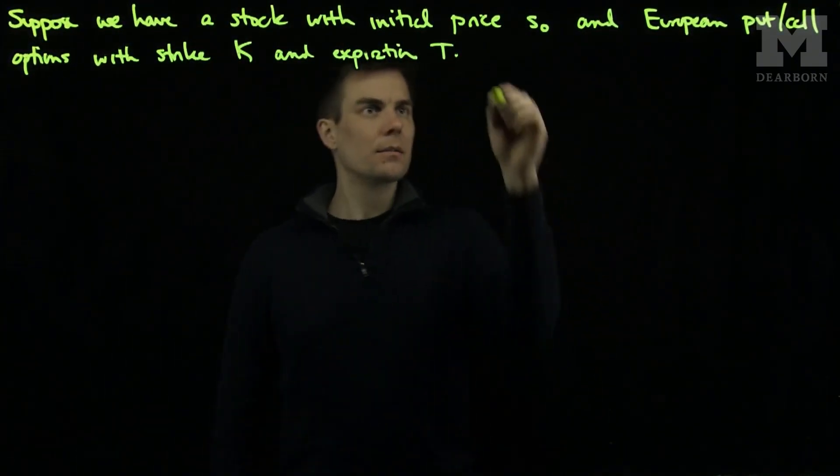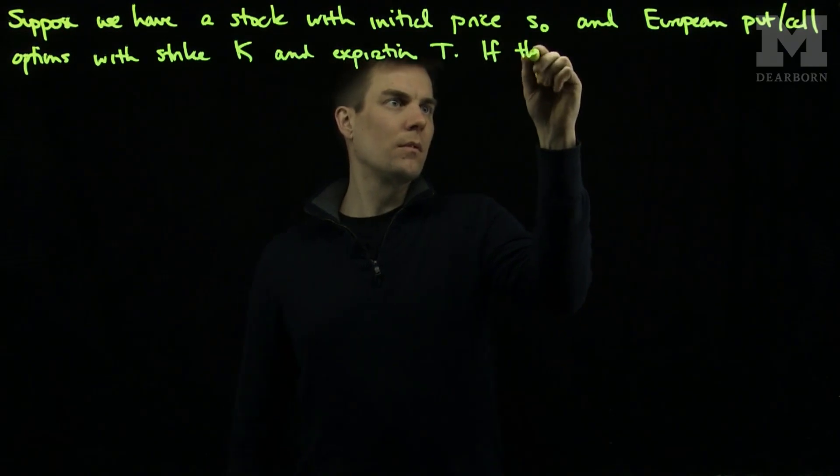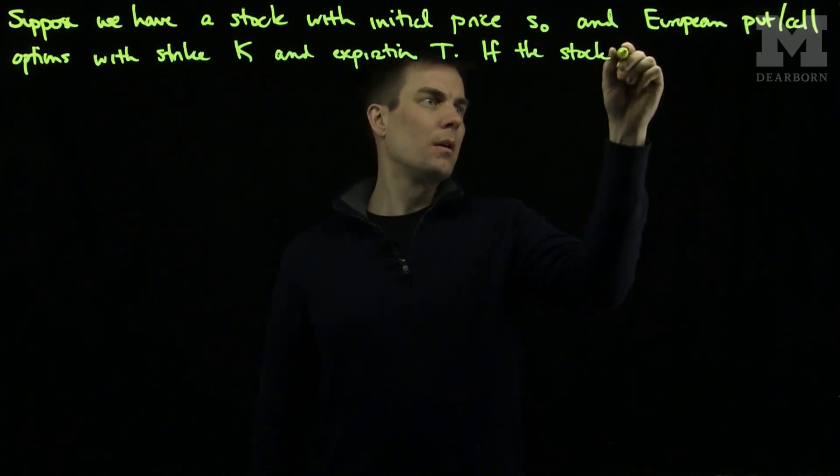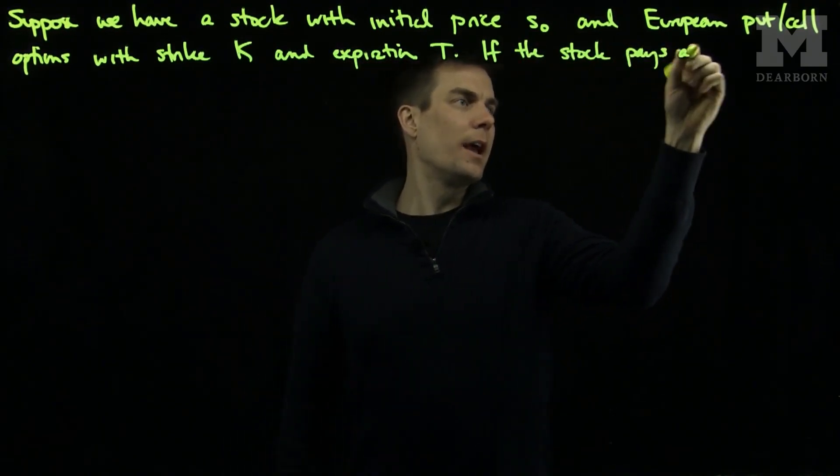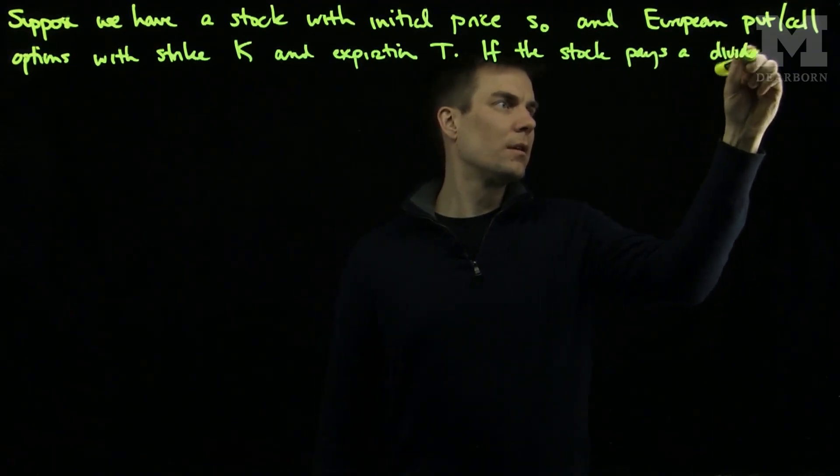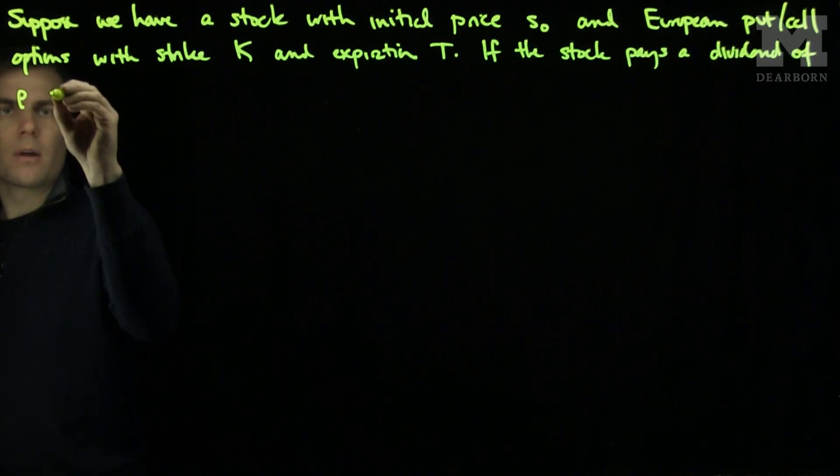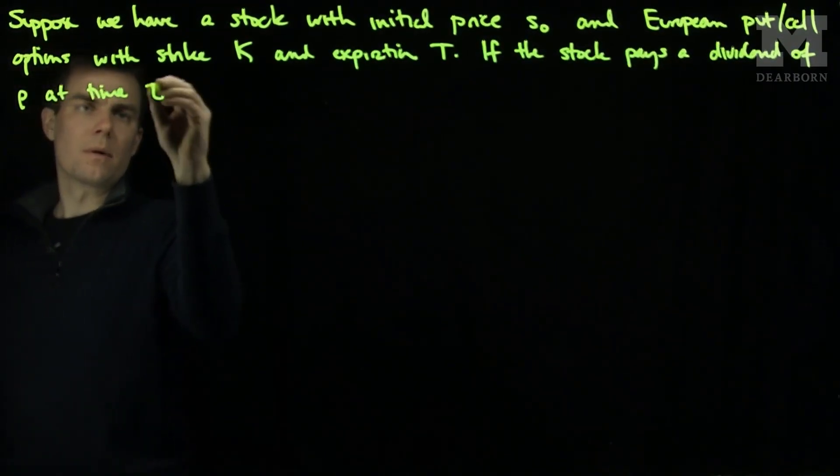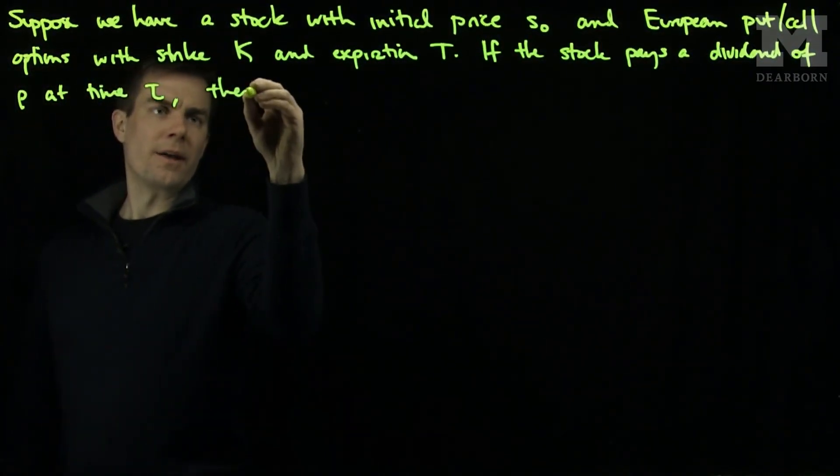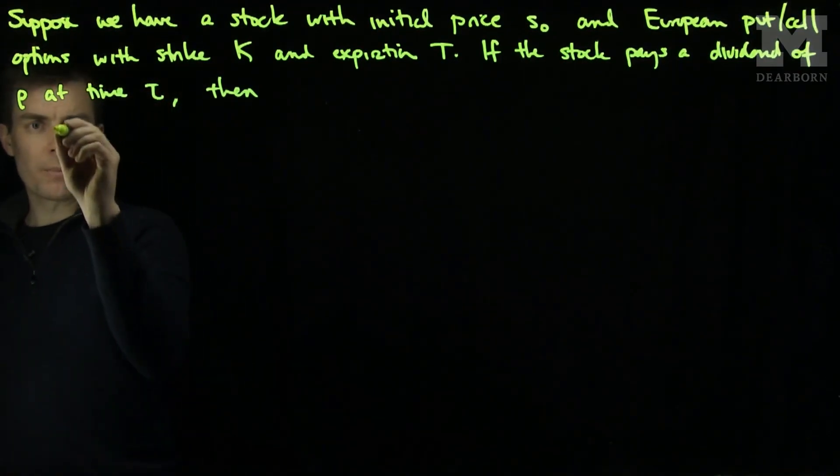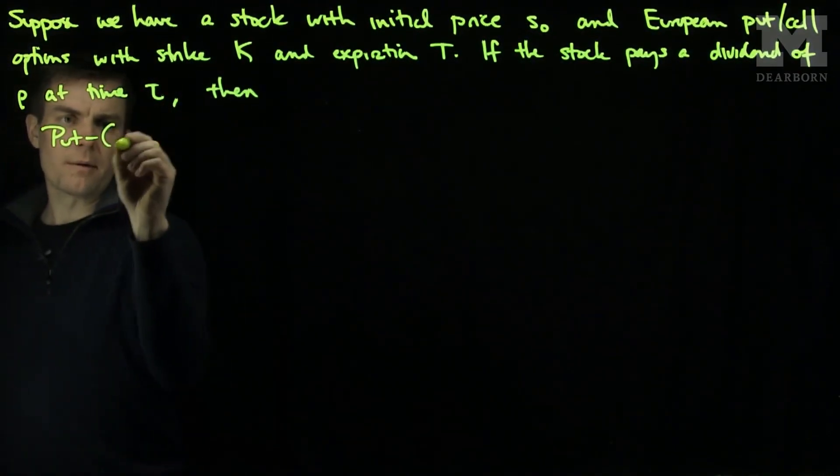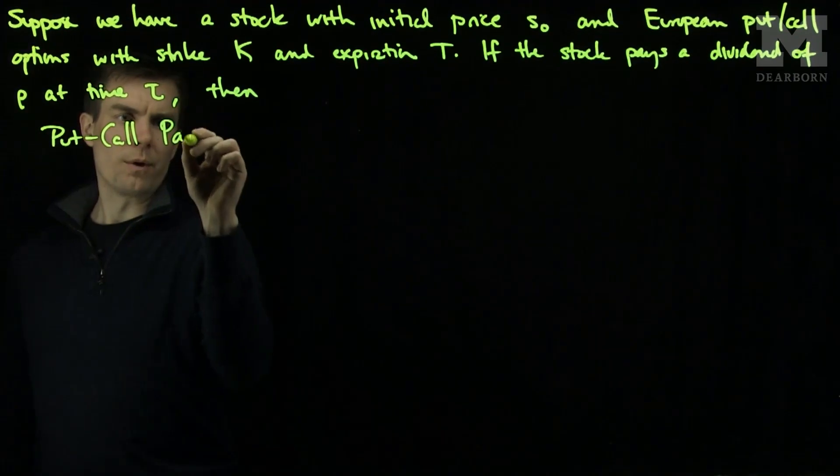a stock with initial price S0 and European put-and-call options with strike price K and expiration T. If the stock pays a dividend of rho at time tau, then we have the following rendition of put-call parity.